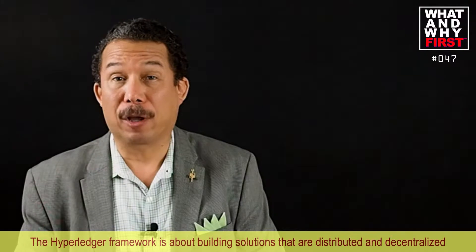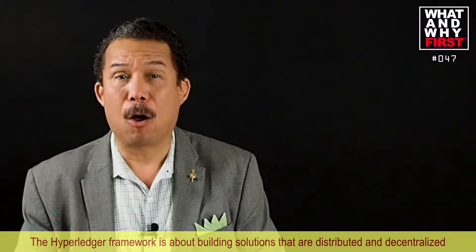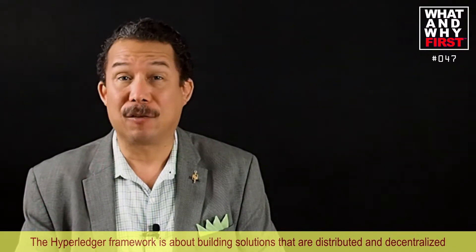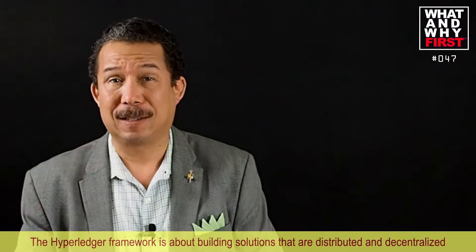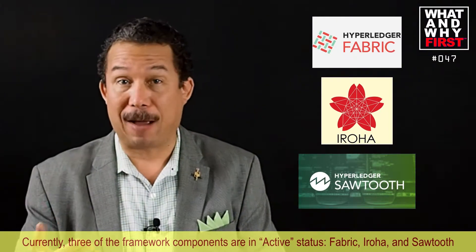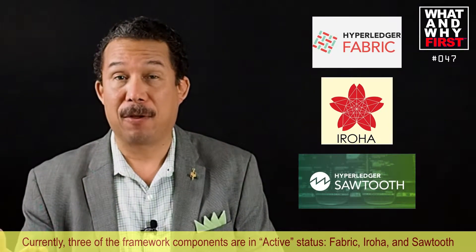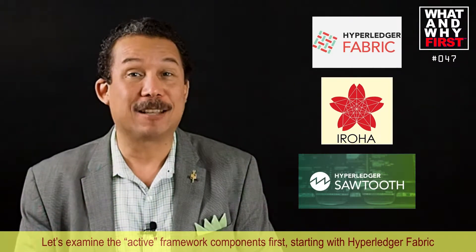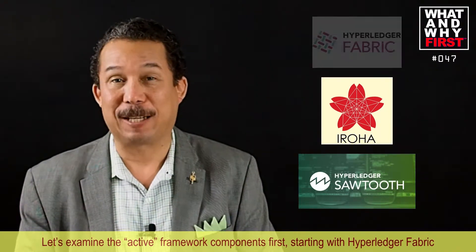The Hyperledger Framework is all about building blockchain solutions that are distributed and decentralized. Currently, three of the framework components are in active status: Fabric, Iroha, and Sawtooth. Active means that they are available and ready for enterprise production solutions. Let's examine the active framework components first, starting with Hyperledger Fabric.